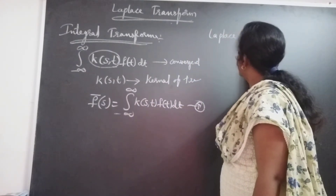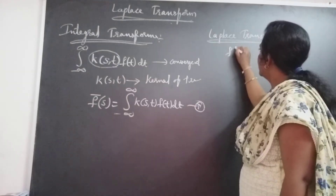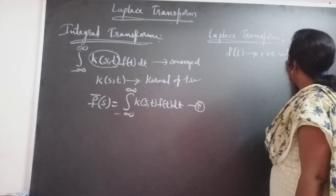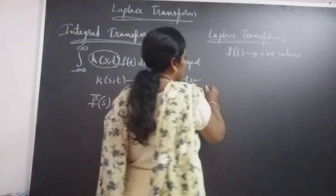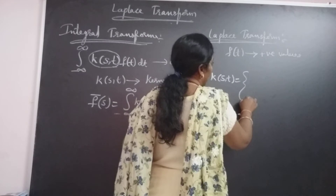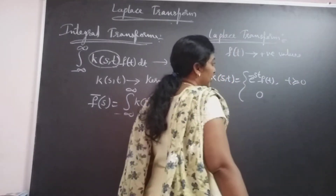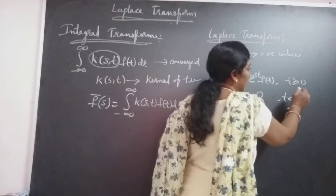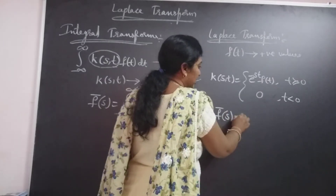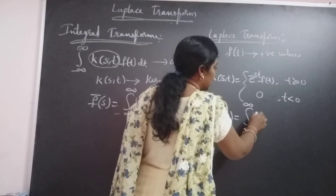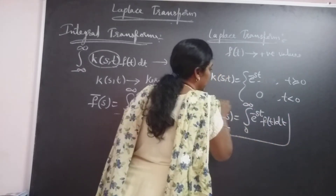Now we discuss the Laplace transform. Laplace transform means the function F(T) must be taken for all positive values only — the function T is defined for all positive values only. The kernel K(S, T) is set as e^(−ST) · F(T) for T ≥ 0, and 0 for T < 0. Substituting these values into equation 1, the Laplace transform is: F̄(S) = integral from 0 to infinity of e^(−ST) · F(T) dT. This is called the Laplace transform.